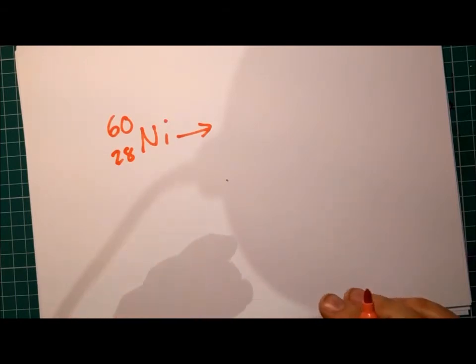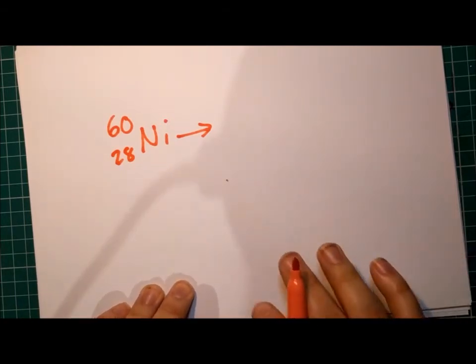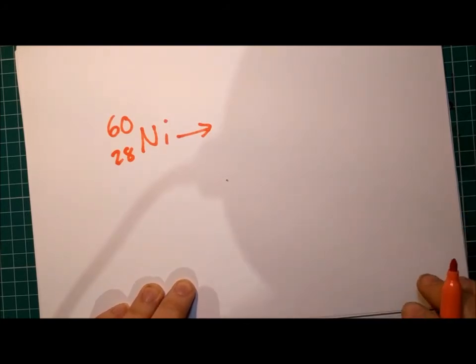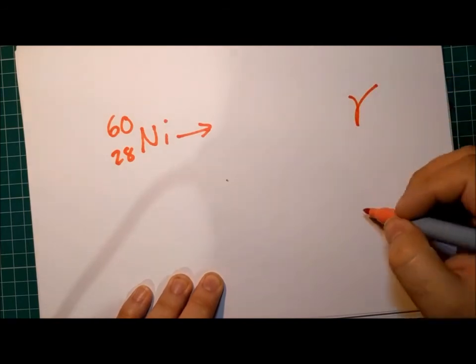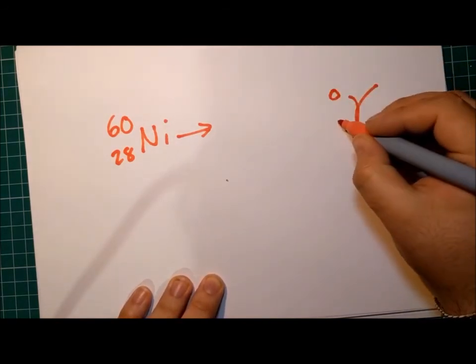It's going to be in quite a high energy state. To become more stable, it can emit a gamma ray. So if it emits a gamma ray, then we draw a symbol for gamma. Gamma has a mass of zero, and it has a charge of zero.